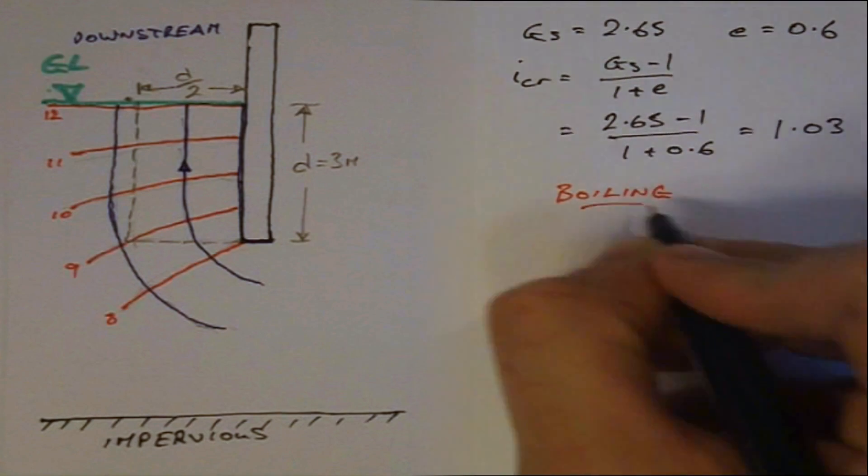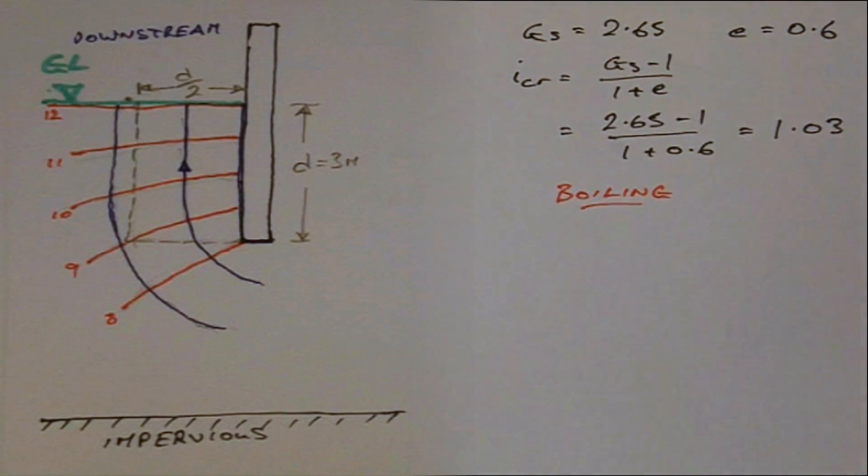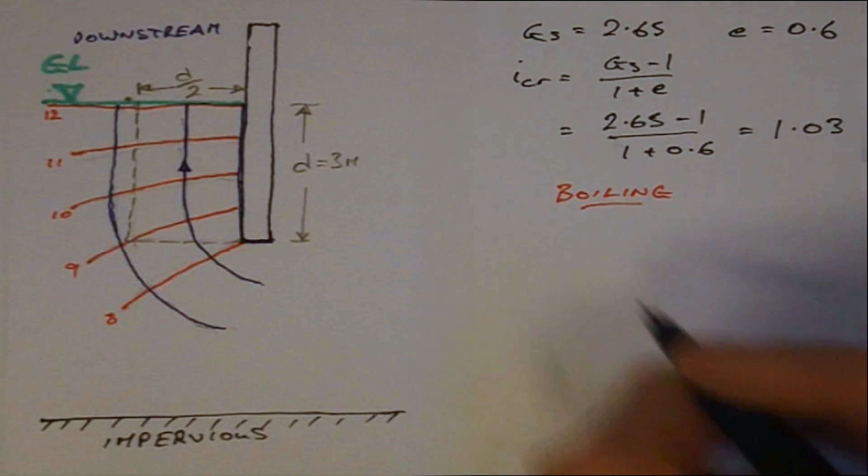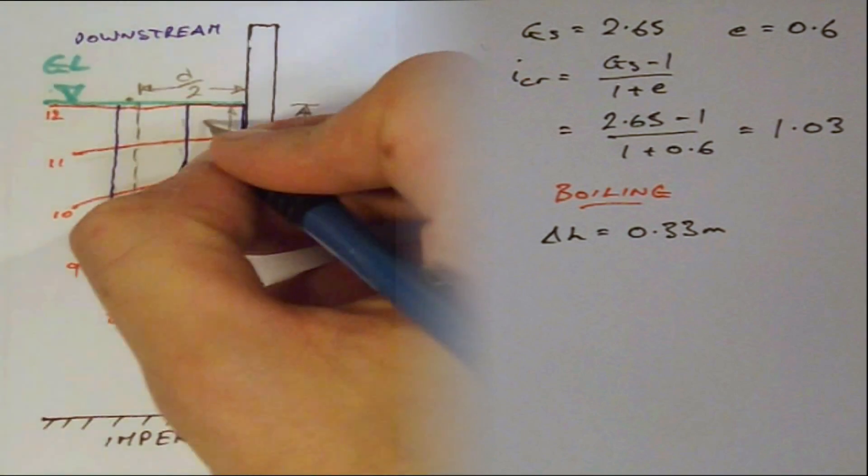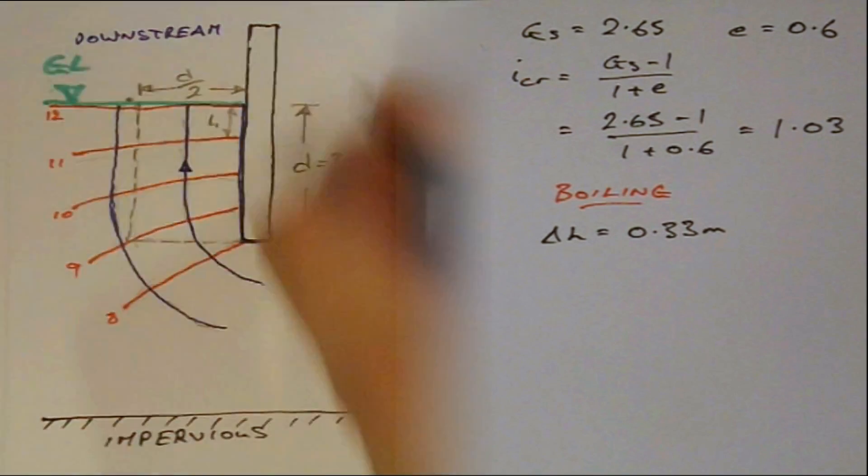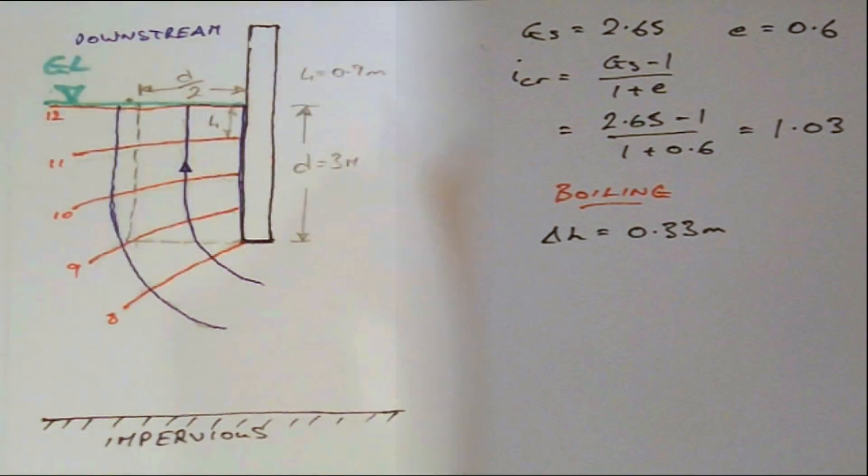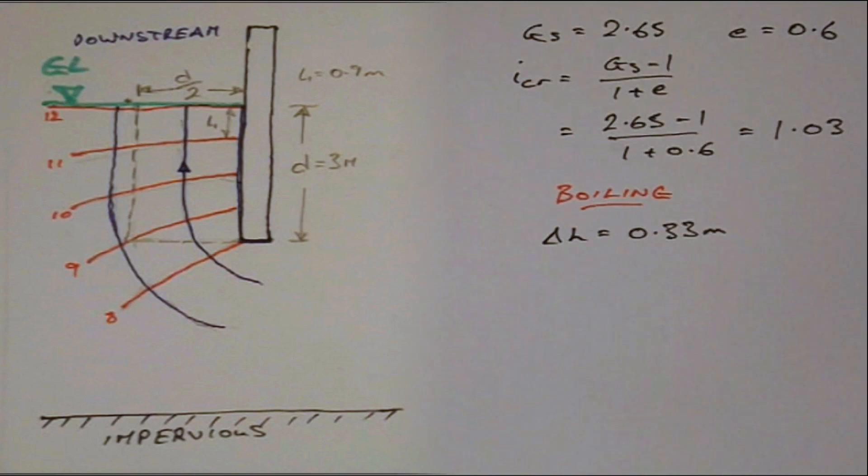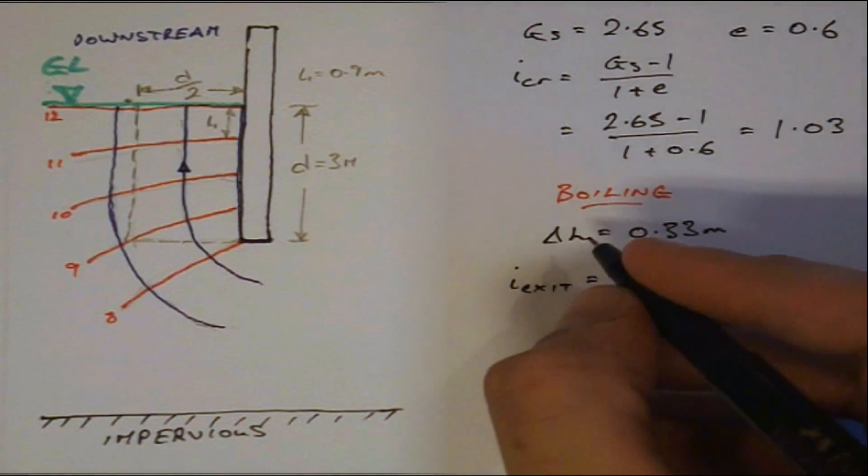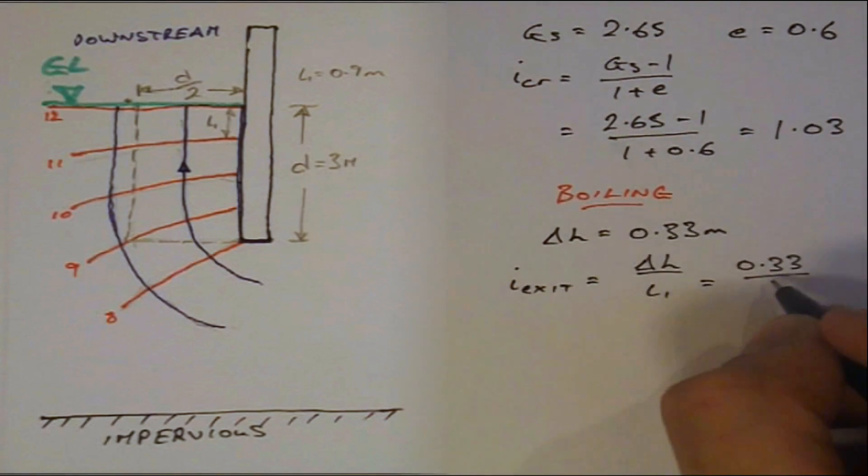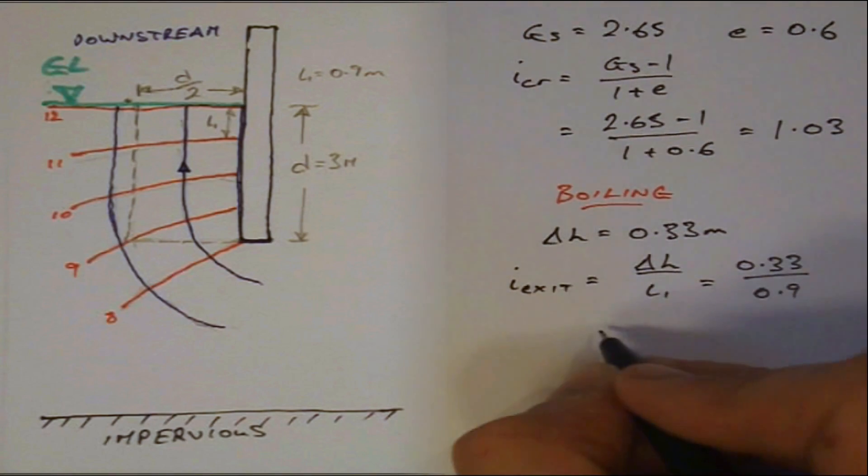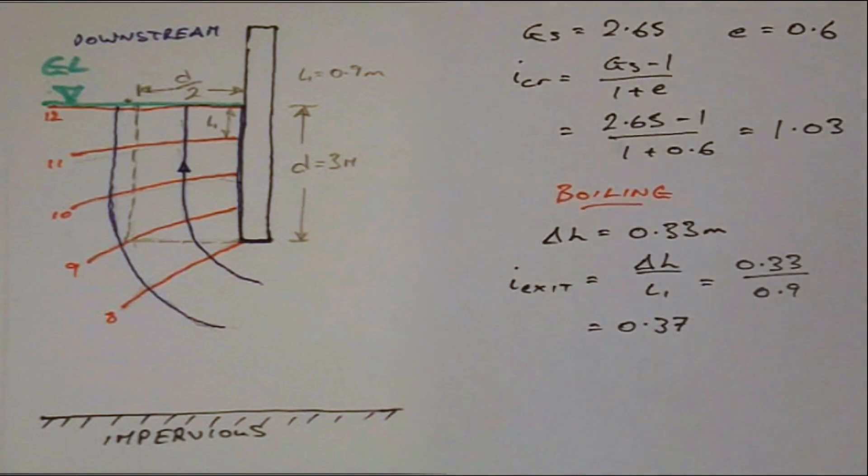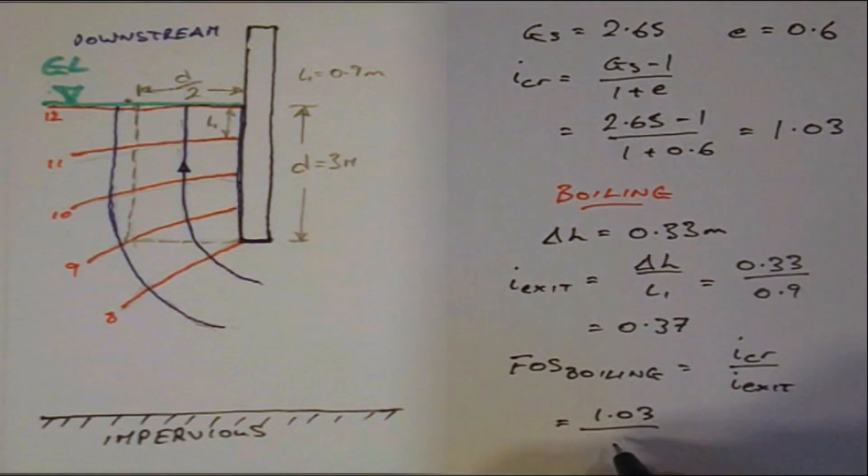Dealing with boiling first, we calculate the exit hydraulic gradient by dividing the drop in head between the last and the second last equipotentials by the average distance L1 between the equipotentials scaled from the flow net. This gives us an exit hydraulic gradient equal to delta H over L1. If delta H is equal to 0.33 metres and L1 is equal to 0.9 metres, the exit hydraulic gradient is equal to 0.37, and the factor of safety is equal to 2.8.